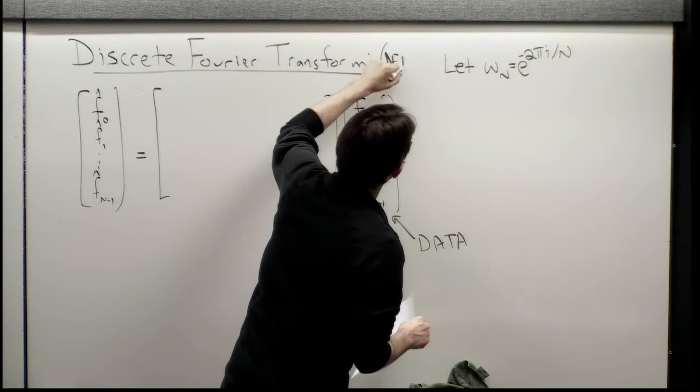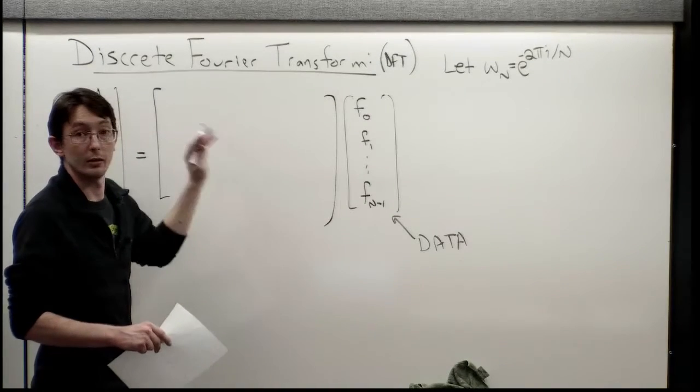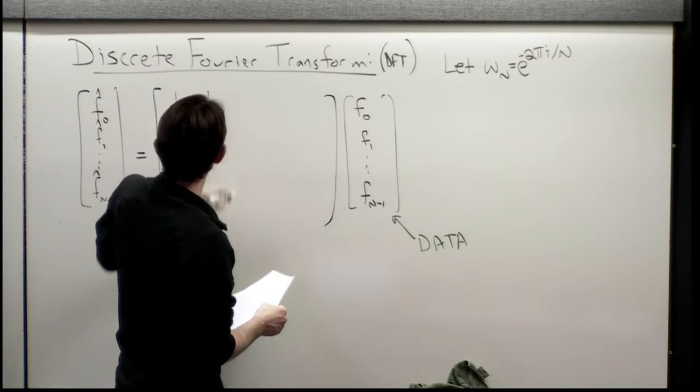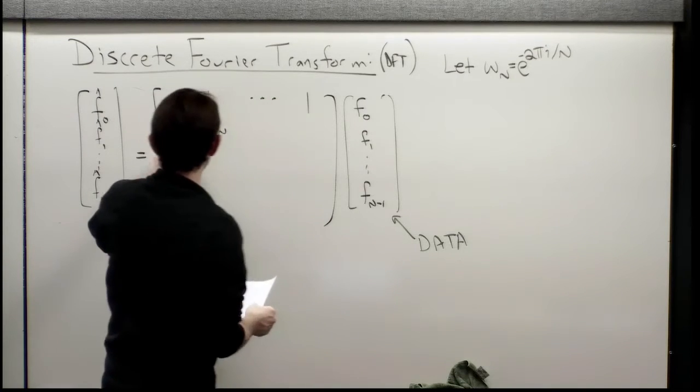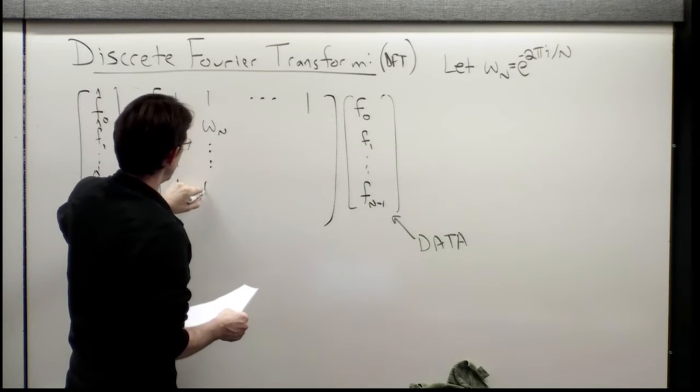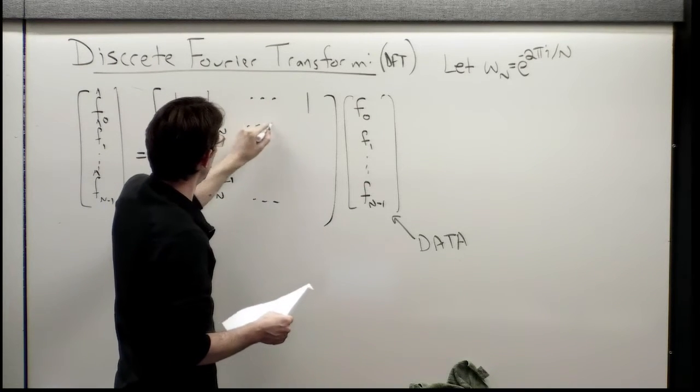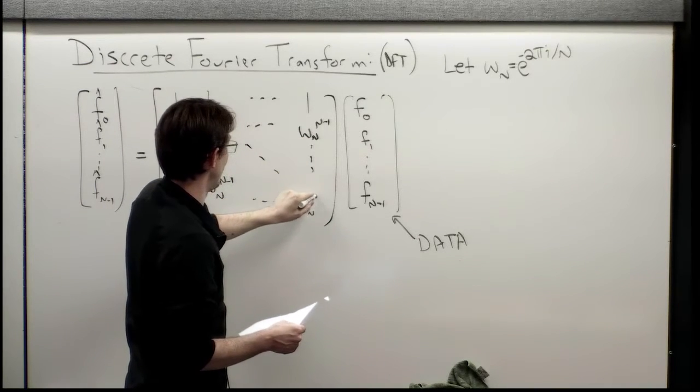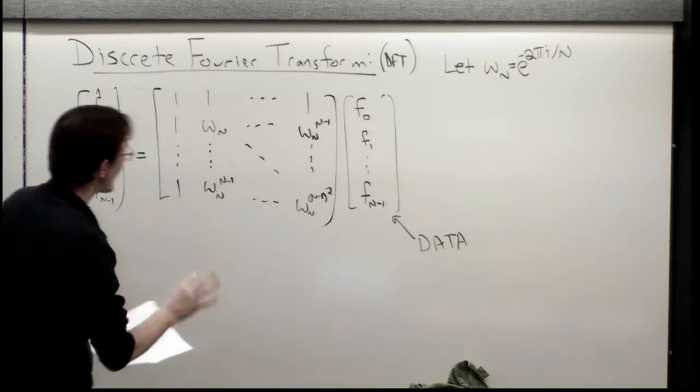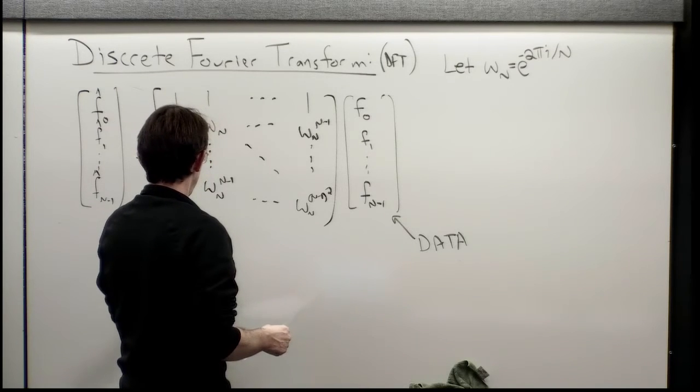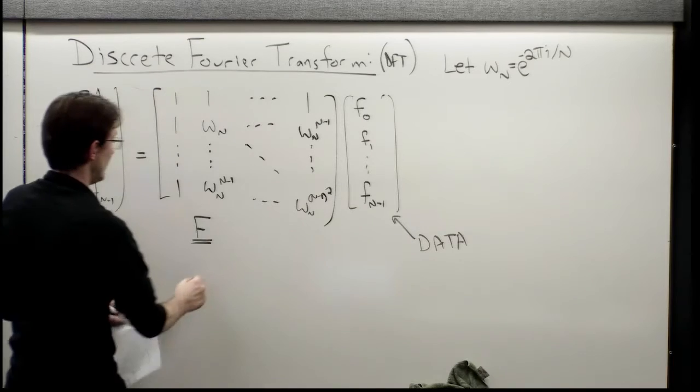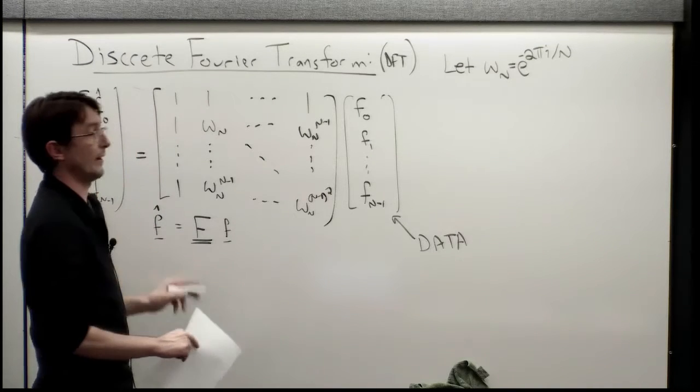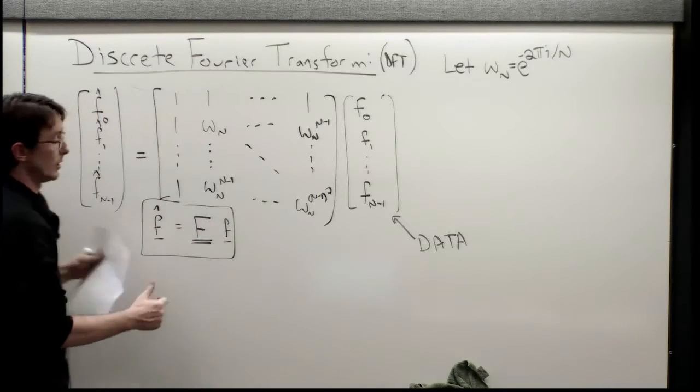We achieve this by means of something called the discrete Fourier transform matrix. We let omega n equal e to the minus 2 pi i over n. This is our fundamental frequency, kind of our sampling frequency. And then what we're going to do is compute the discrete Fourier transform, the DFT, by multiplication of my data with this matrix.